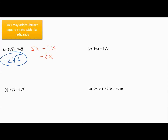Keep in mind that the radical — the square root and the number underneath — must match. If one's a square root and one's a cube root, you can't do this. Or if one's a 3 and one's a 4 underneath, you can't do this. Both of those things have to match. Looking at the next problem, they're both square root of u, so adding the coefficients: 5 plus 3 gives me 8, and you keep the common square root of u.